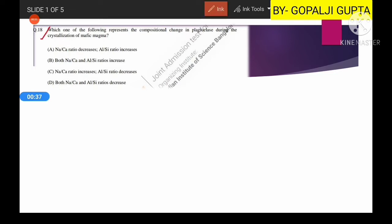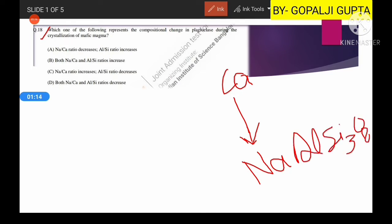Which one of the following represents the compositional change in plagioclase during crystallization of mafic magma? During crystallization of any magma, first we have crystallization of calcic plagioclase that is anorthite, then it moves towards sodic plagioclase that is albite. The formula of albite is NaAlSi3O8 and the formula of anorthite is CaAl2Si2O8. Now let us see the options—they are asking about sodium to calcium ratio and aluminium to silicon ratio.